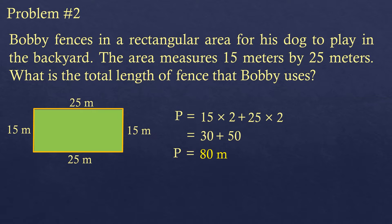You can also add all sides directly: 15 plus 25 plus 15 plus 25, which gives the same answer. As long as you follow the concept that perimeter is the total length of all sides, any valid method works, though adding directly is a slightly longer solution.